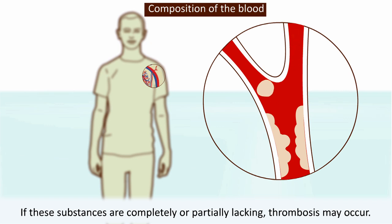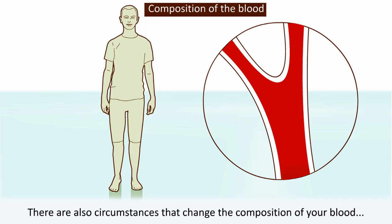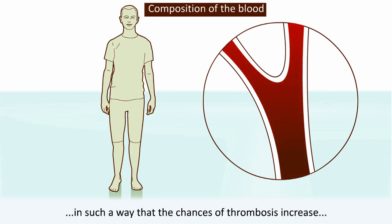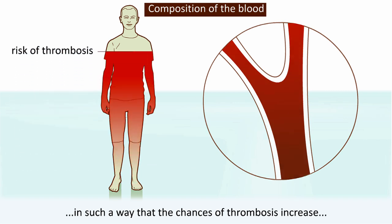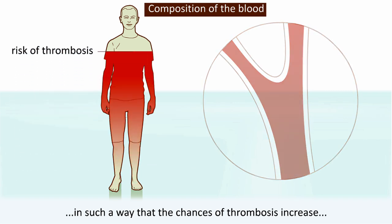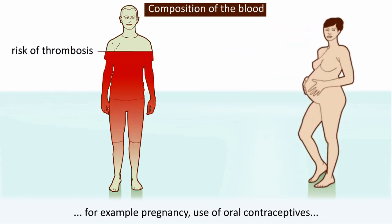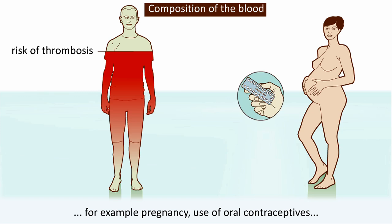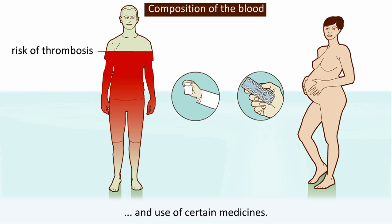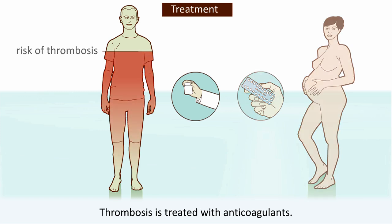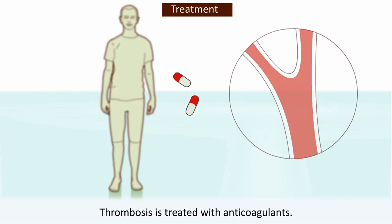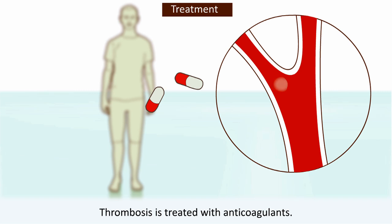There are also circumstances that change the composition of your blood in such a way that the chances of thrombosis increase — for example, pregnancy, use of oral contraceptives, and use of certain medicines. Thrombosis is treated with anticoagulants.